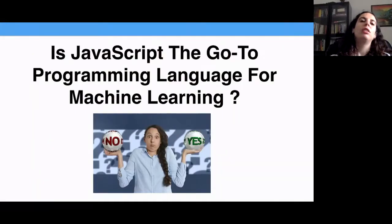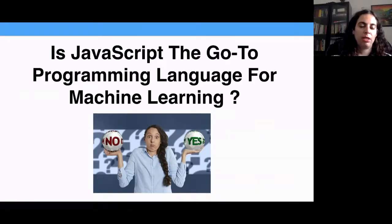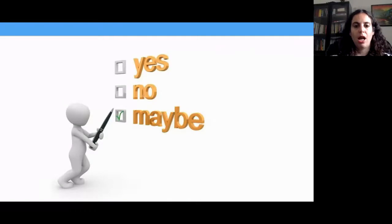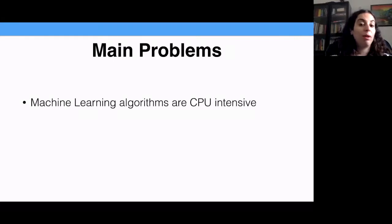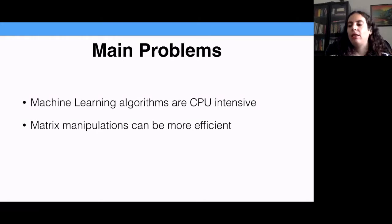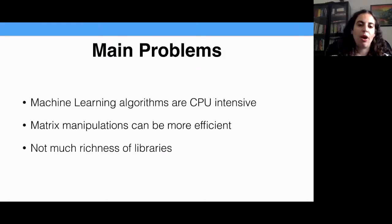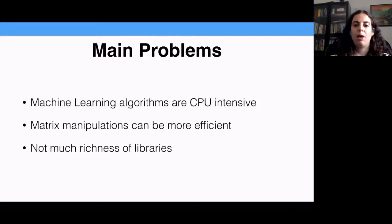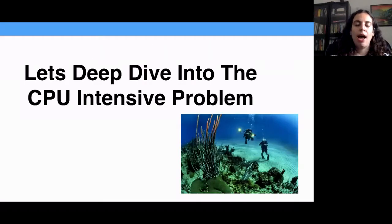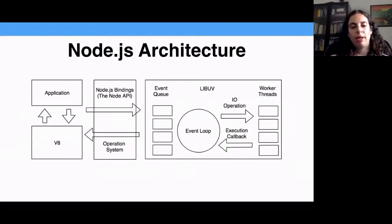The answer is probably 'maybe', because you can write machine learning algorithms in JavaScript. The main problem is that the algorithms are CPU-intensive, and matrix manipulations are currently not super efficient in Node.js core. There's also not much richness of libraries, though there are a lot of libraries you can work with. I want to go deep into the CPU-intensive problem and talk a little about Node.js architecture to explain it.